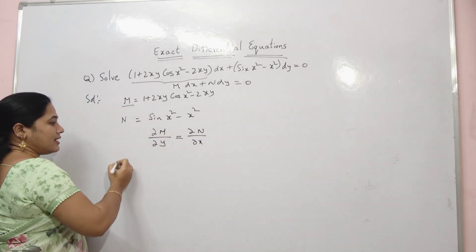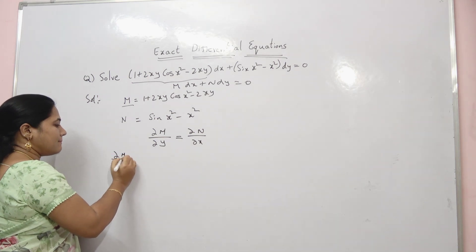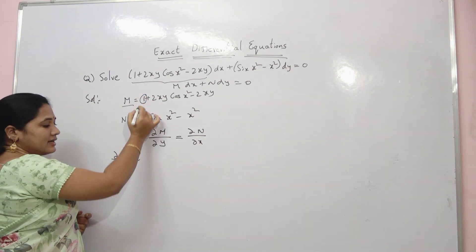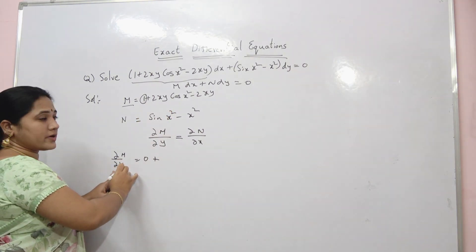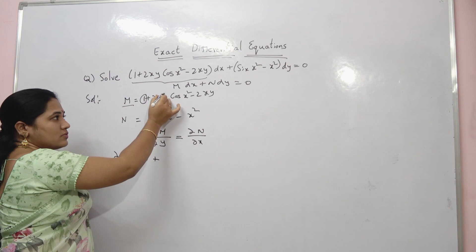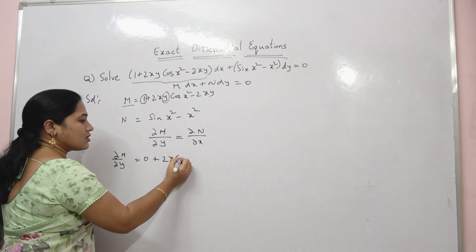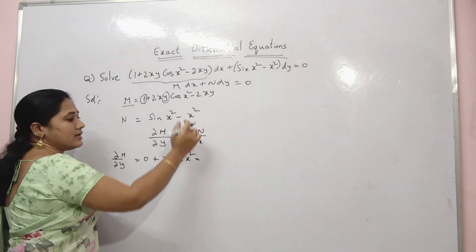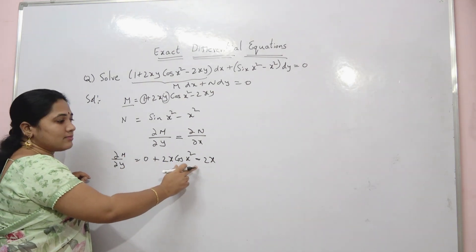First take the M value and differentiate with respect to y. So ∂M/∂y: differentiation of 1 is 0; 2 is constant, x is treated as constant, and cos(x²) is also constant, so differentiation of y is 1, giving 2x cos(x²). Then 2 and x are constant, so differentiation of y is 1, giving minus 2x. Therefore ∂M/∂y = 2x cos(x²) − 2x.